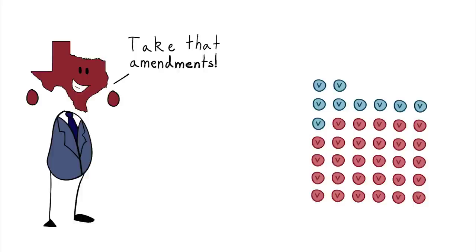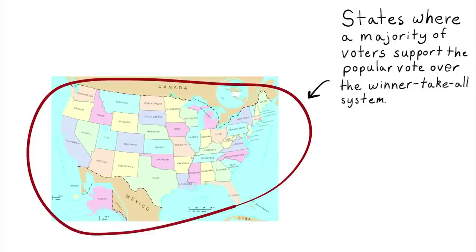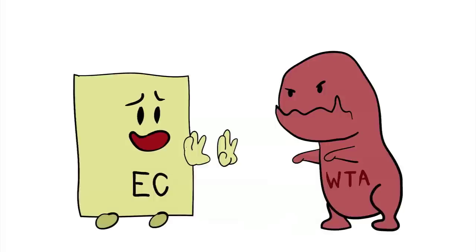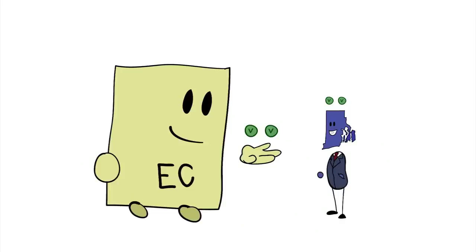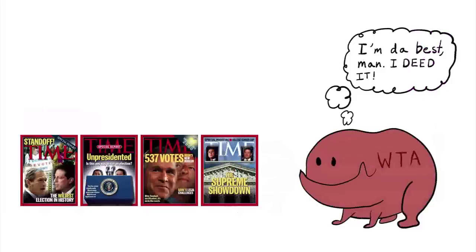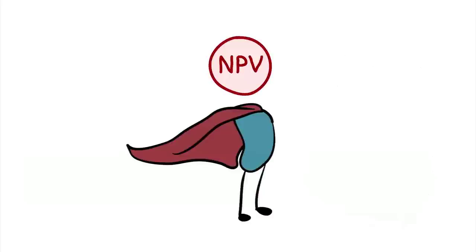Most states don't like our current winner-take-all system, because it destroys the original intention of the electoral college — to give smaller states more power — and instead gives the power to swing states. Not to mention that the winner-take-all system often leads to wacky election outcomes. This is where the National Popular Vote Bill comes in.